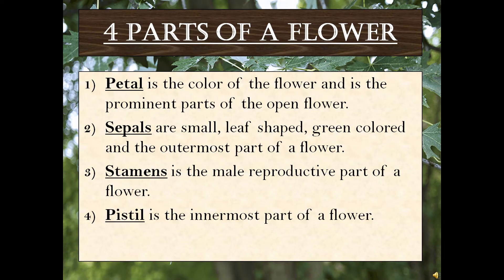There are four parts of a flower: petals, sepals, stamens, and pistil. First, petals — petals give the flower its color and are the prominent parts of the open flower. Second, sepals — sepals are small, leaf-shaped, and form the outermost part of a flower. Third, stamens — stamens are the male reproductive part of a flower. Fourth, pistil — pistil is the innermost part of a flower.